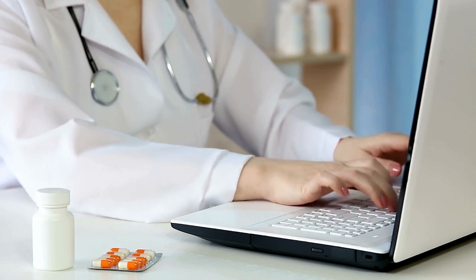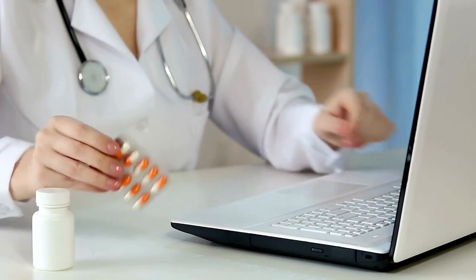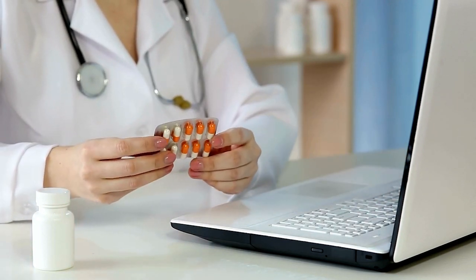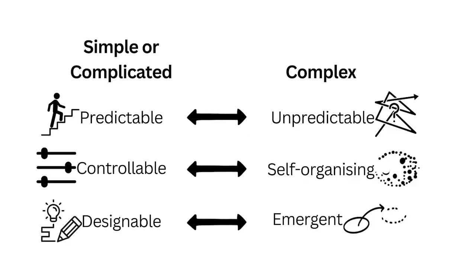This would require careful planning, training and configuring the software to meet organisational needs. The challenge involves integrating the system with existing workflows and ensuring technical functionality. But while it may be resource intensive, once the solution is implemented, it becomes a replicable process for other hospitals. A complex problem, on the other hand, involves many dynamic, interdependent factors that are often unpredictable and evolve over time. Problems that are complex are non-linear — they cannot be fully broken into their independent parts. Solutions are emergent and require adaptation as conditions change. Outcomes are not guaranteed, even with previous experience.